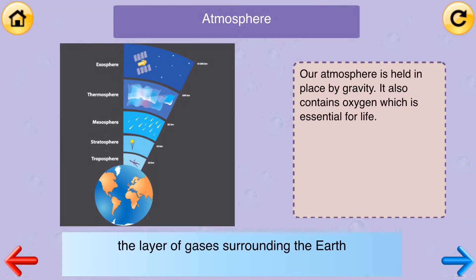Atmosphere. The layer of gases surrounding the Earth. Our atmosphere is held in place by gravity. It also contains oxygen, which is essential for life.